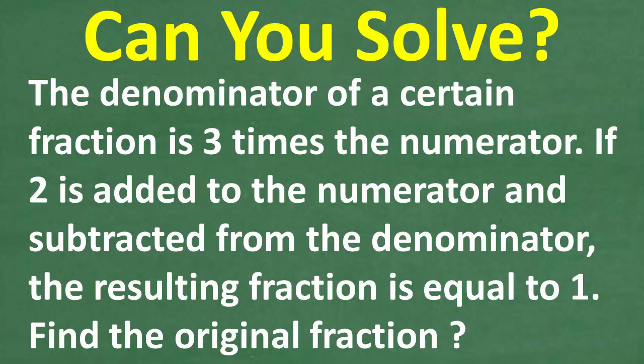Let me go ahead and read this one more time. The denominator of a certain fraction is three times the numerator. If two is added to the numerator and subtracted from the denominator, the resulting fraction is equal to one. We want to find the original fraction.